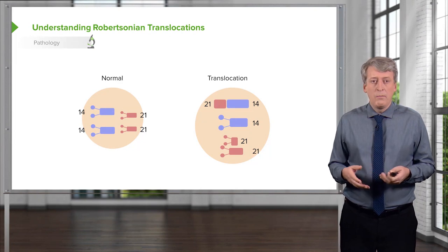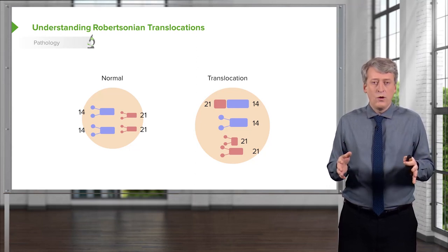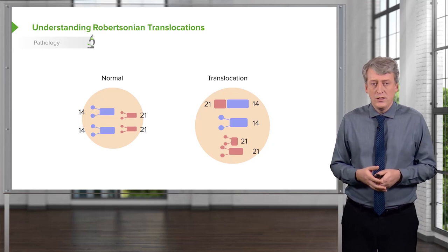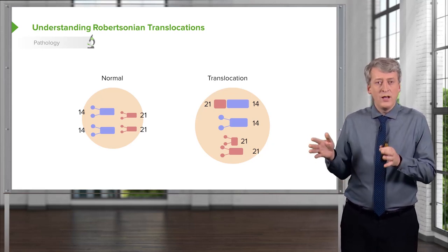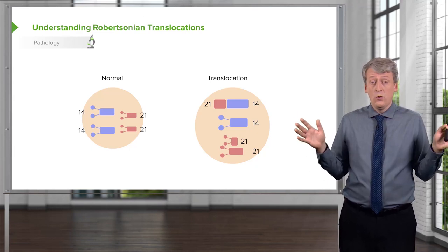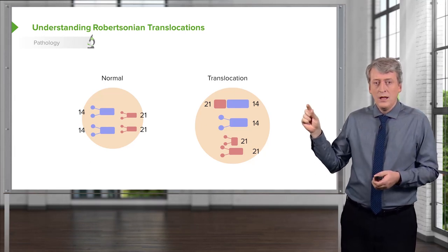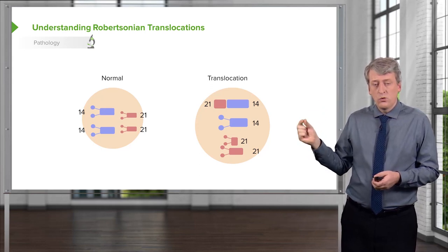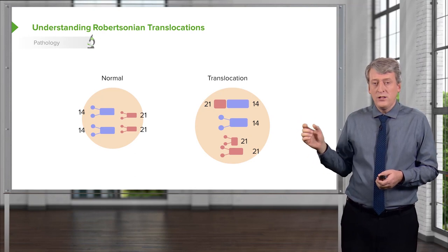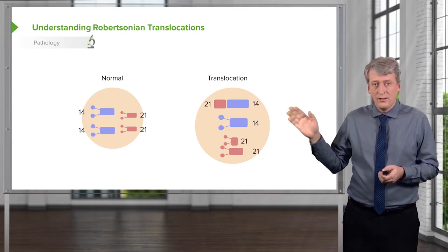About 6% of the time, this happens through Robertsonian translocation. Robertsonian translocation is a bit complicated, so let's walk through it. Here we have a normal patient and a spouse who has a Robertsonian translocation. This spouse is completely normal in appearance and behavior. They have two chromosome 14s, and for chromosome 21, a piece of it has been translocated onto the end of one of those 14 chromosomes, so they have the appropriate amount of chromosomal material, just mislocated.